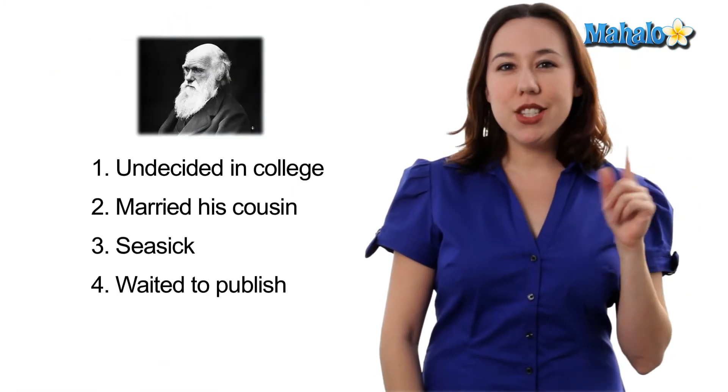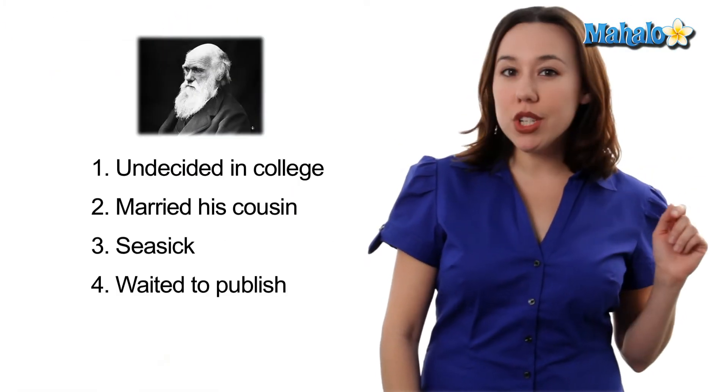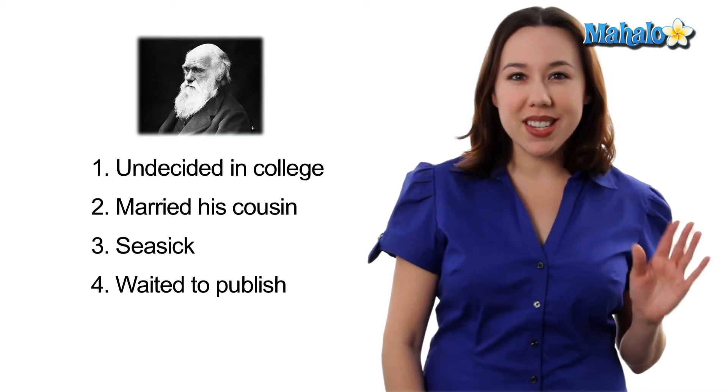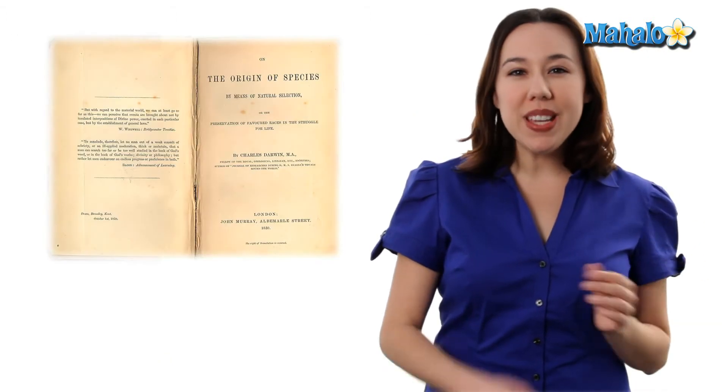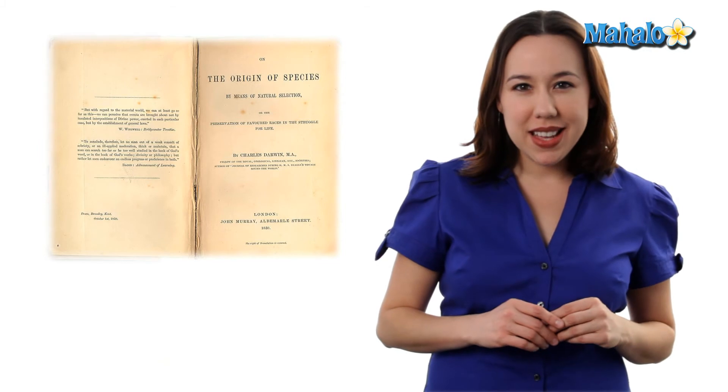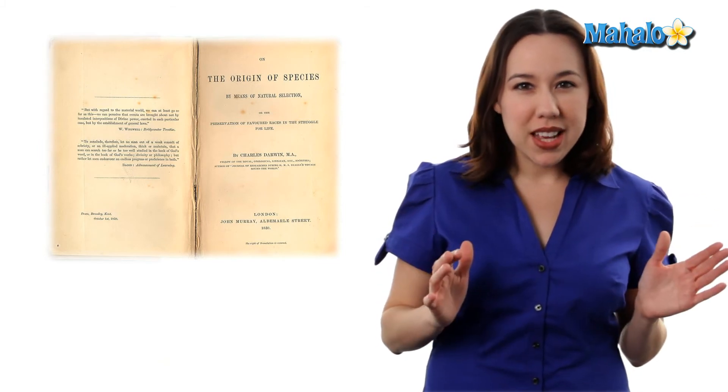Number 4. Darwin sat on his manuscript, The Origin of Species, for almost 20 years. This manuscript is where he outlined his evolutionary theory, and it may have never been published had it not been for fellow naturalist Alfred Wallace, who came up with the same ideas independently.